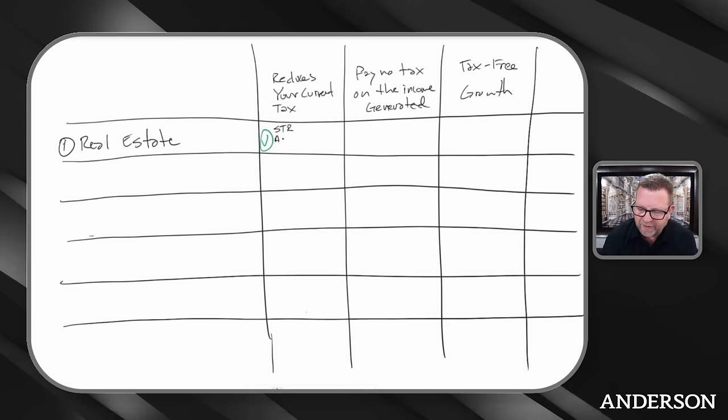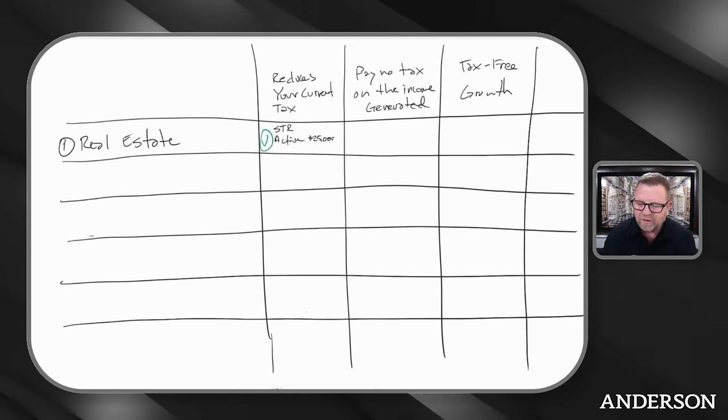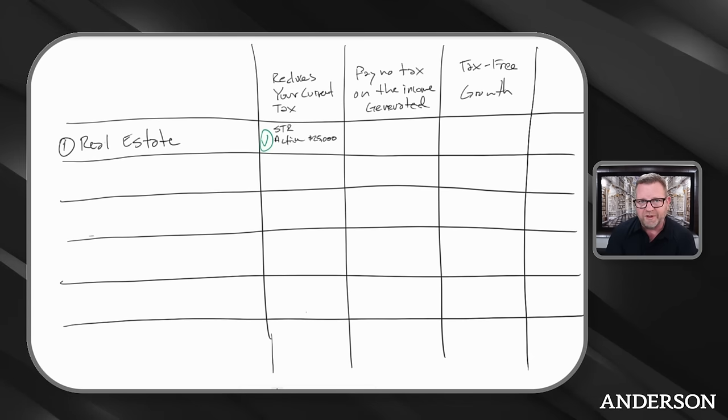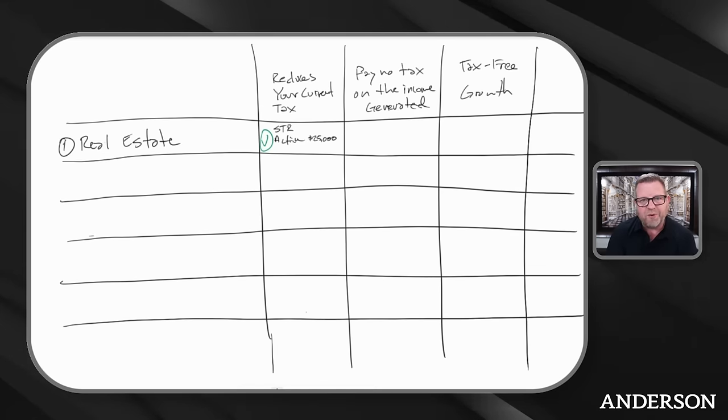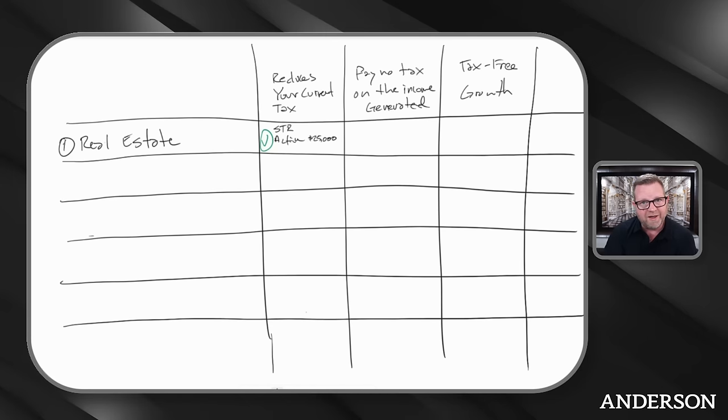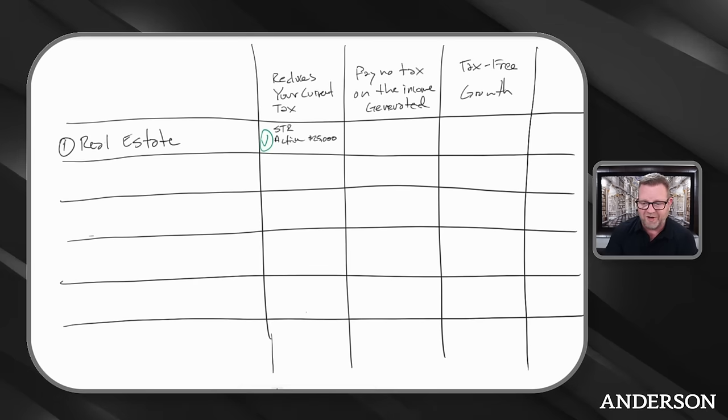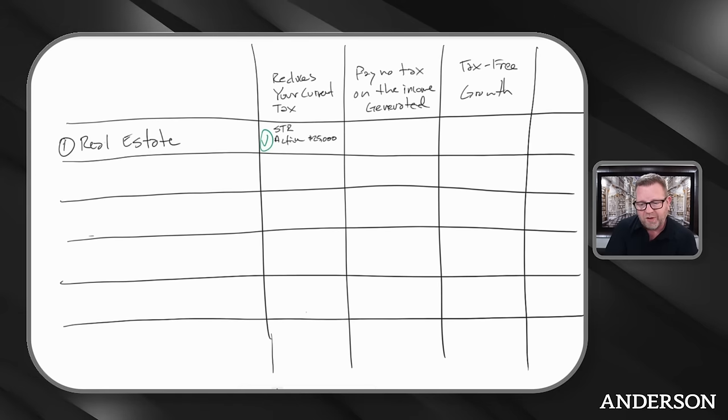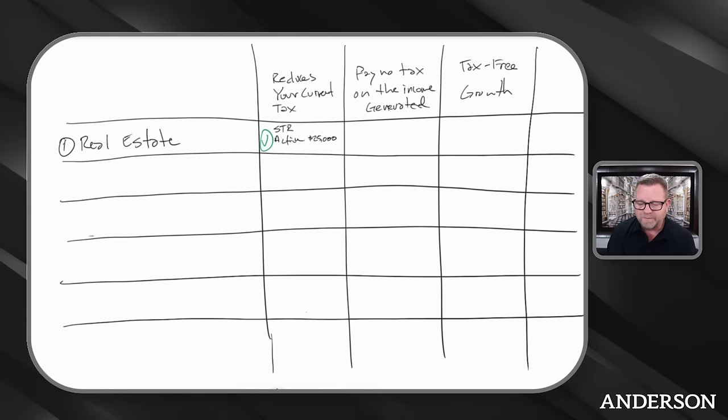Number two is you could be an active participant in your rental properties. You can get up to $25,000 loss allocation. There's a phase out if you are over $100,000 of gross income up to $150,000. But you still can end up with just buying a regular rental property offsetting some of your income.